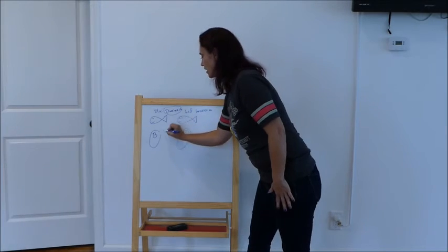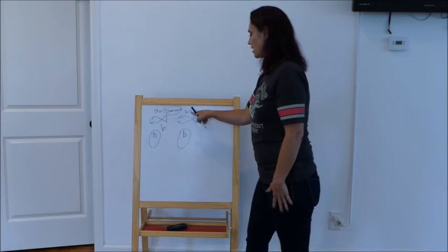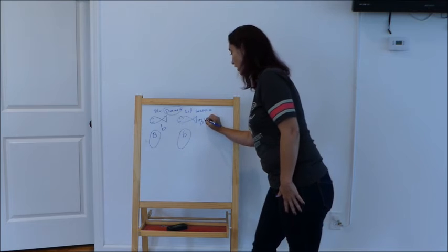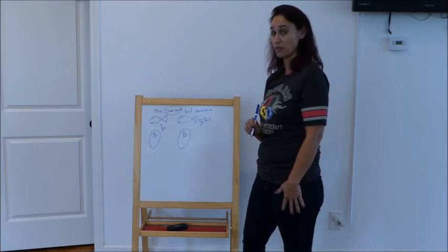We could never be, this dominant blue could never be a little b. This recessive red could never be either a capital B or a capital R or a little r if we've decided that B is going to be for blue.